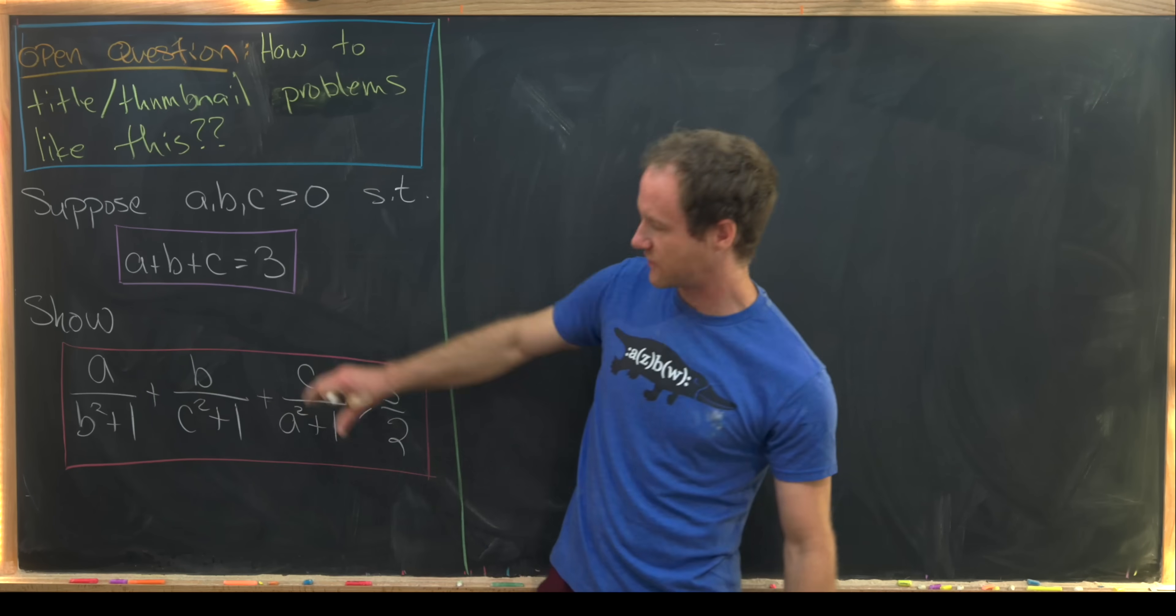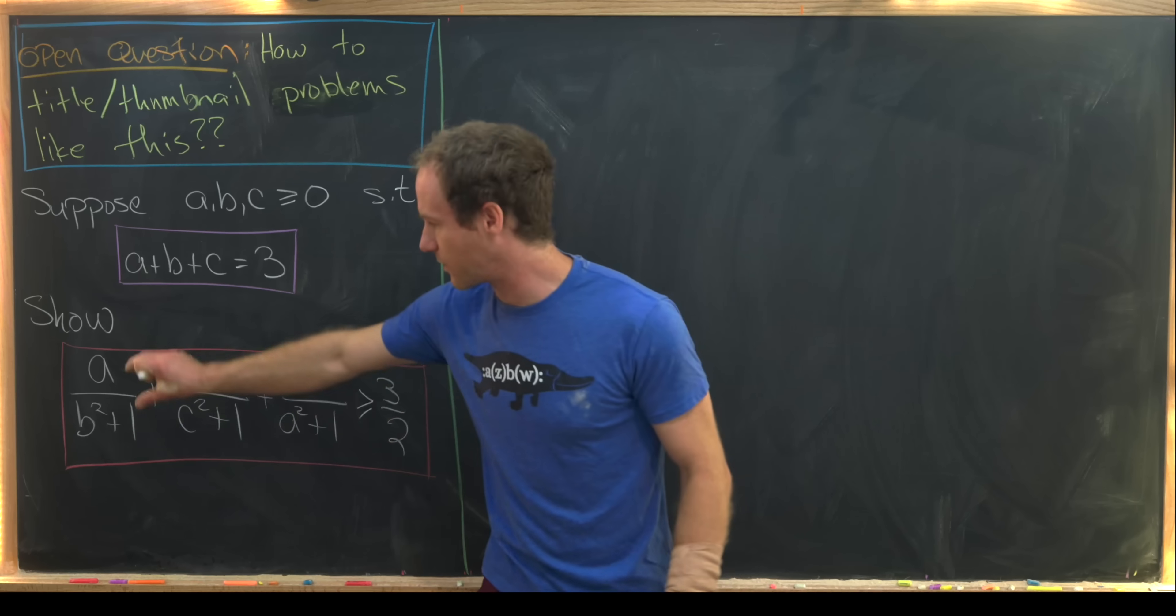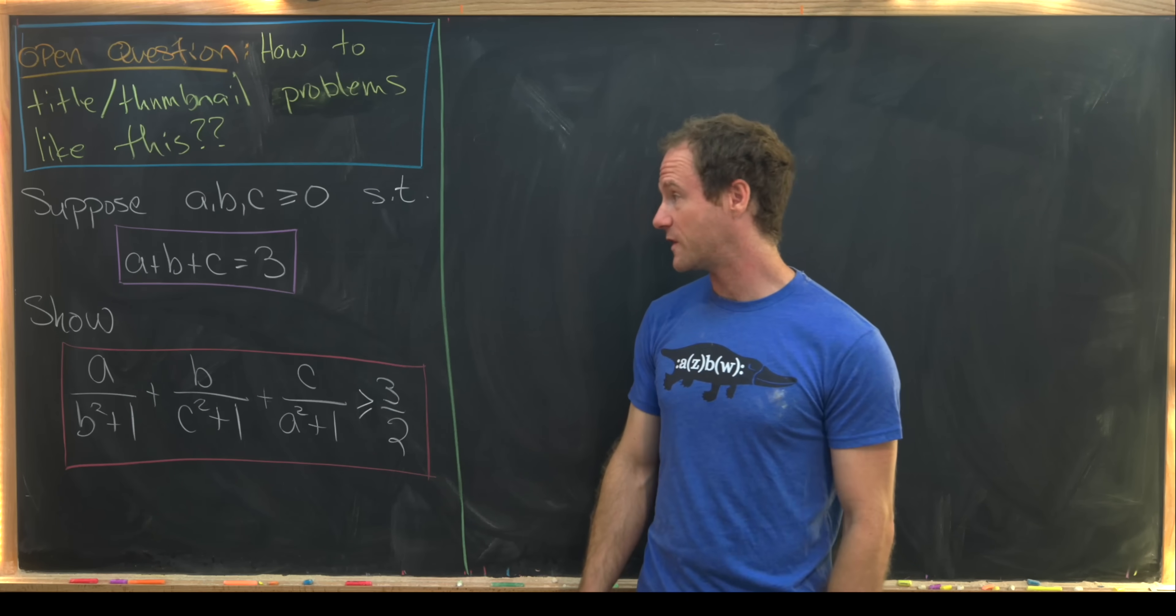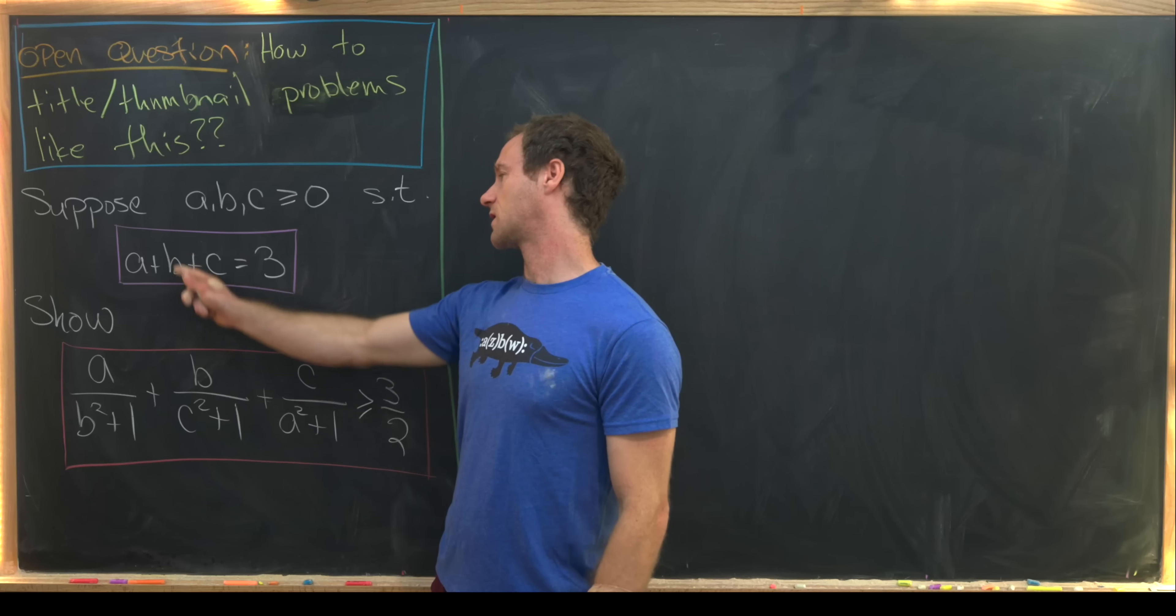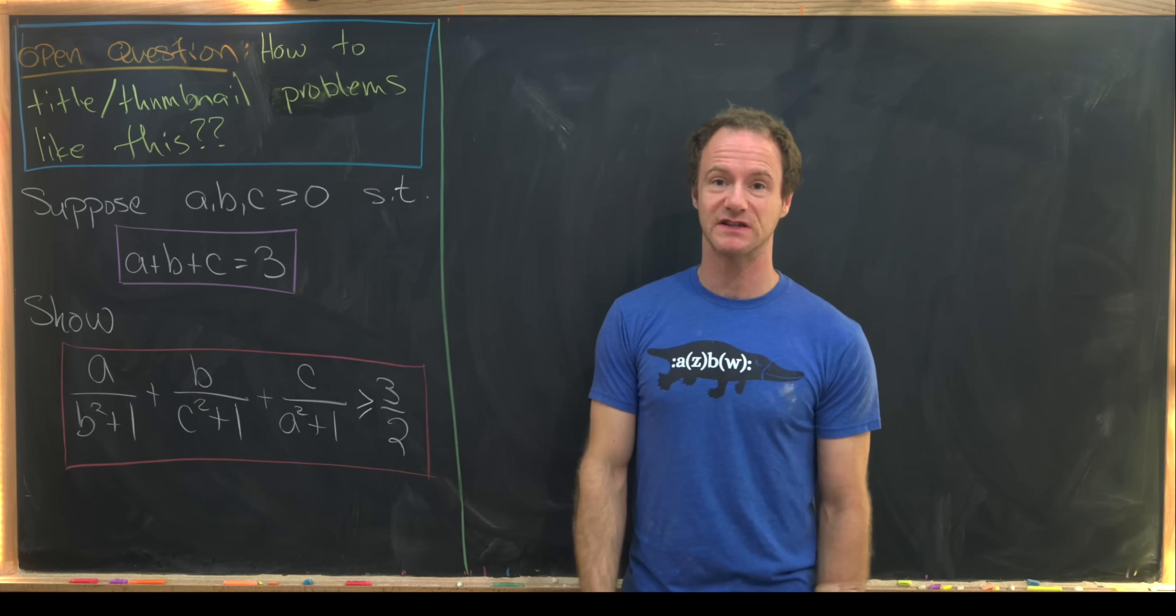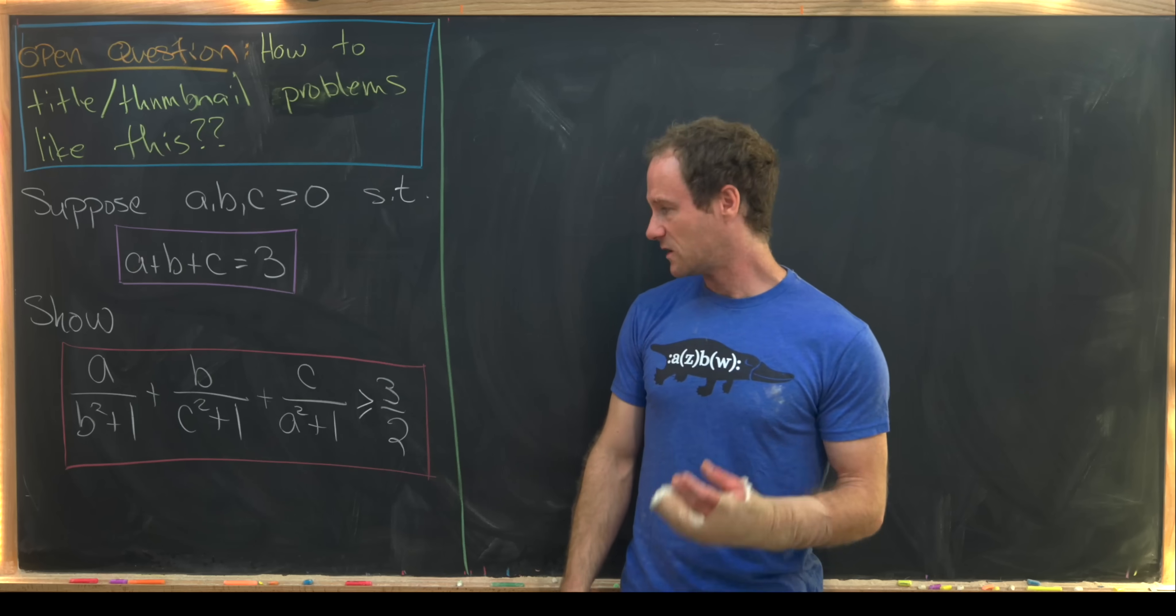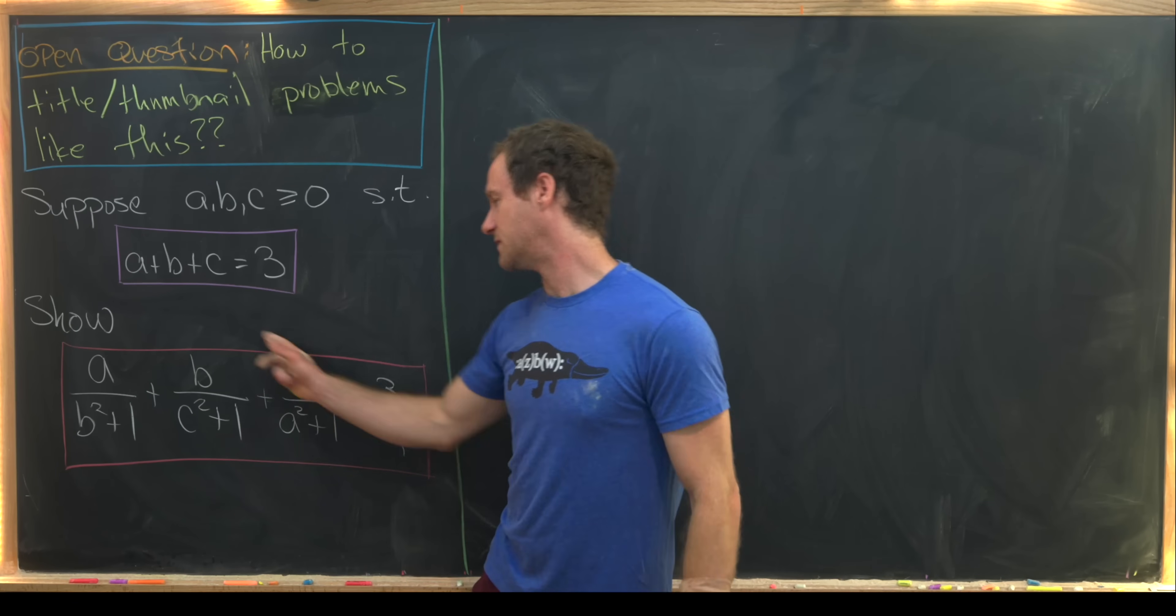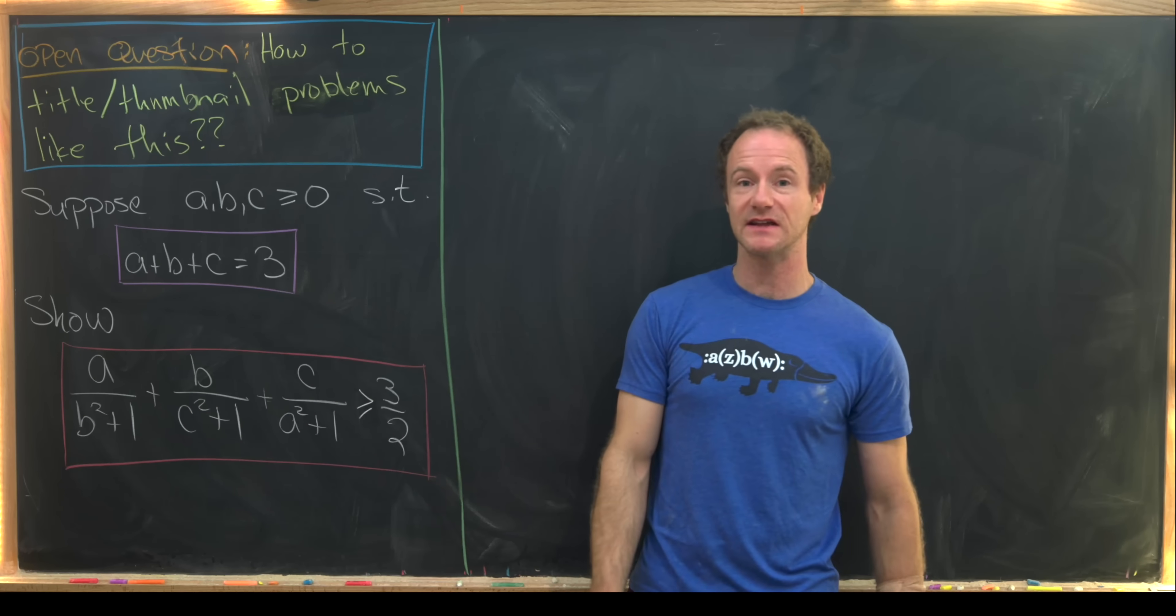That, combined with the fact that our given object is a plus b plus c, tells us that we will likely want to extract an a plus b plus c out of this left-hand side.